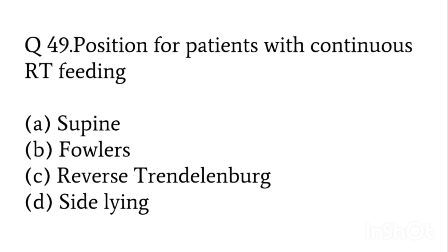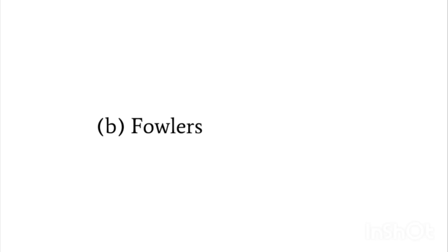The position for the patient with continuous Ryle's tube feeding — options: supine, Fowler's, reverse Trendelenburg, or sideline. The answer will be Fowler's position. This will prevent esophageal reflux and gastric reflux and also help prevent aspiration.